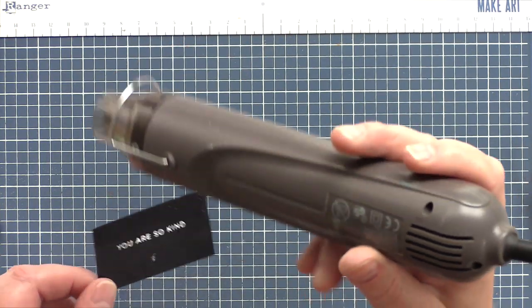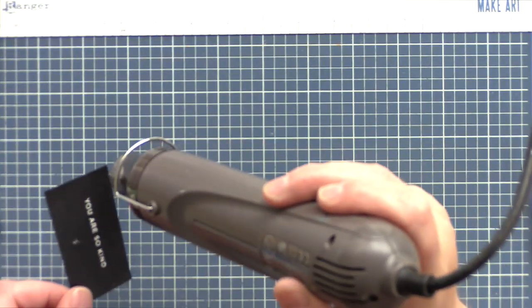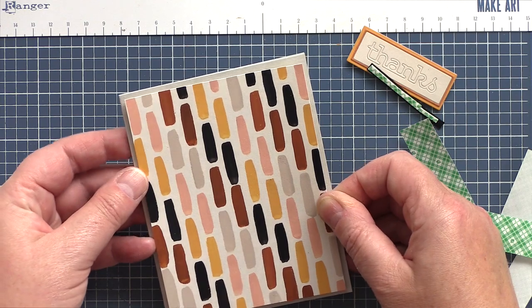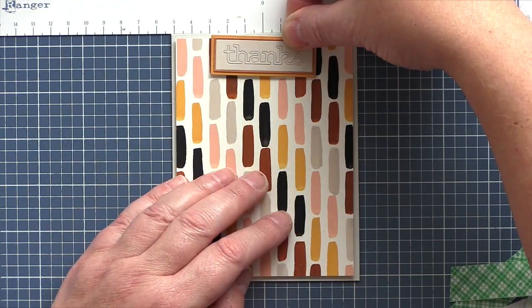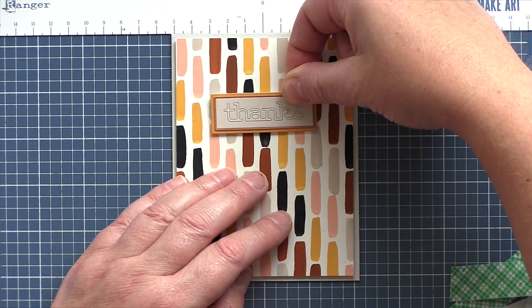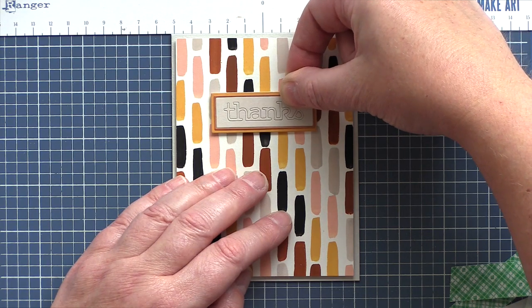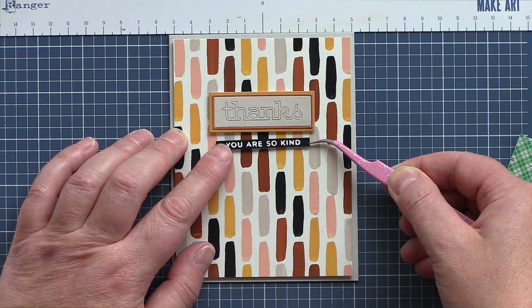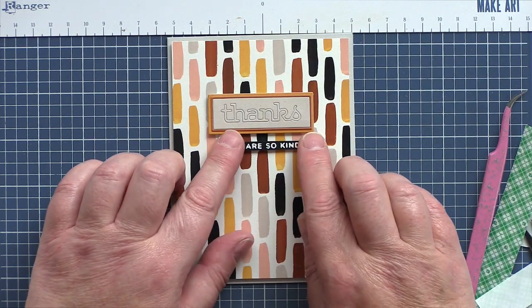I stamped and white heat embossed another sentiment from the Simple Sentiments 2 set that went with the Thanks Frame die cut and trimmed the piece to a skinny banner. Then I added foam adhesive to the back of all the elements and mounted the panel onto a fog card base before aligning the Thanks die cut top and center with a coordinating sentiment strip underneath.